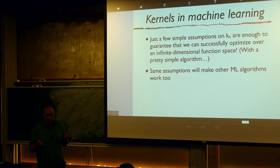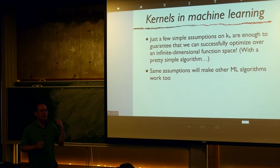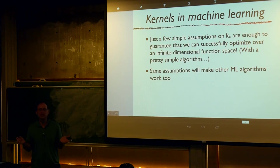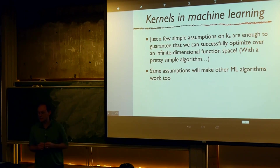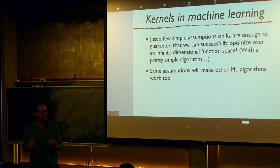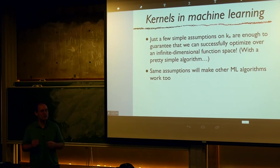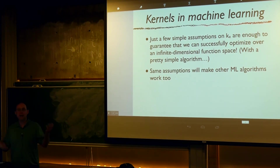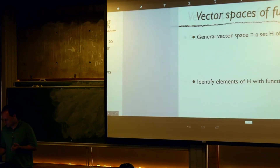Before we get started, I want to emphasize how amazing this is: we're making a few really simple assumptions about a kernel function, and they're going to guarantee that we can successfully optimize over an infinite-dimensional space of functions, even with finite computers. The same justification I'll give for the kernel perceptron is going to work for a whole bunch of other kernel machine learning algorithms that are very much in use today.